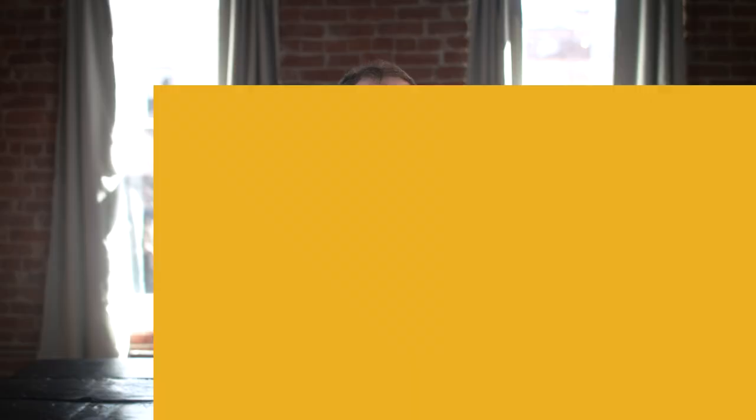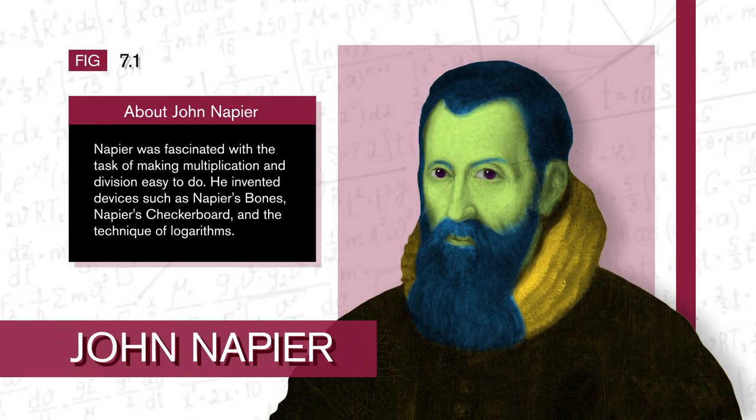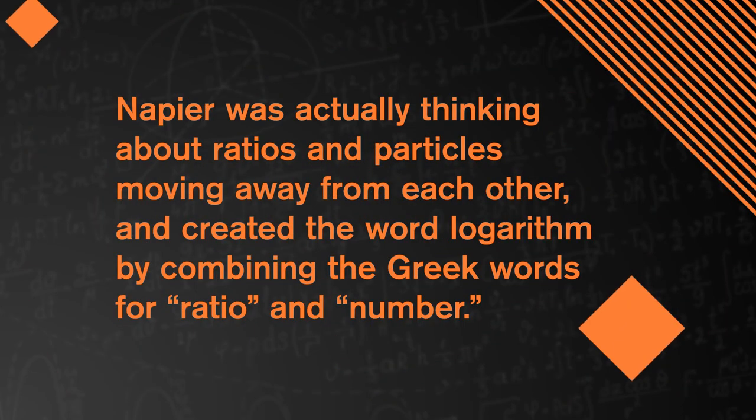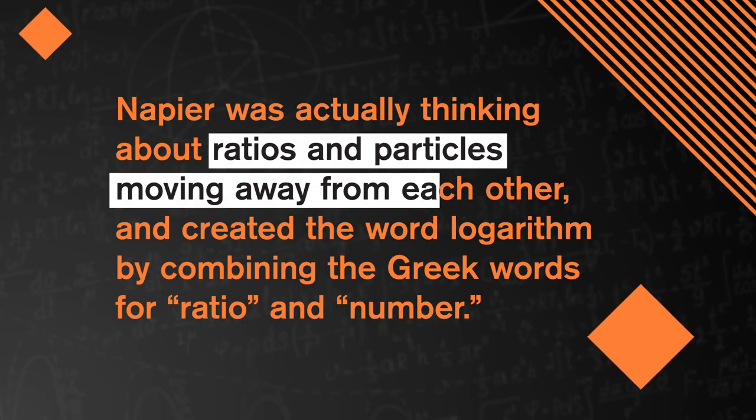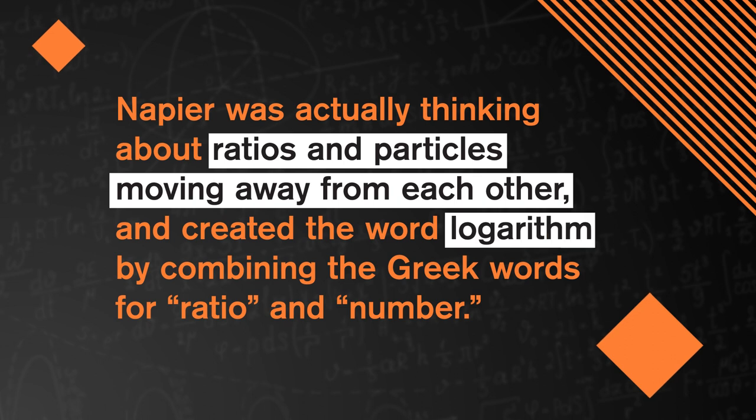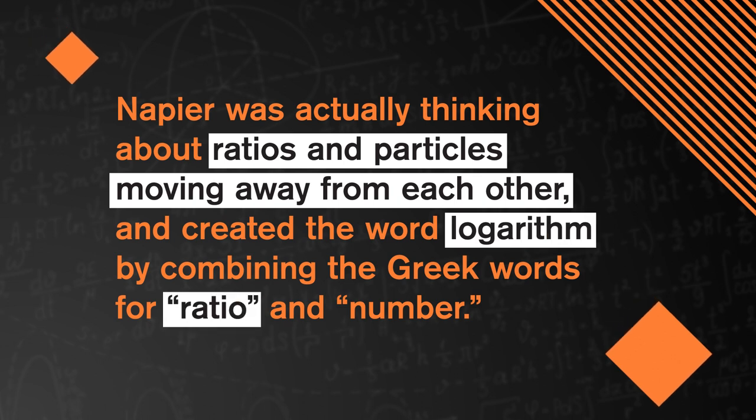And some came close, but it took until 1614 for the mathematician John Napier to publish his revolutionary work. And so the logarithm was born. Napier was actually thinking about ratios and particles moving away from each other, and created the word logarithm by combining the Greek words for ratio and number.